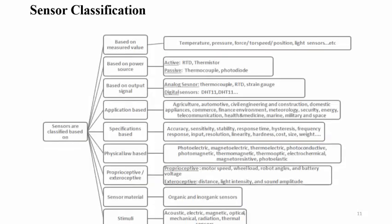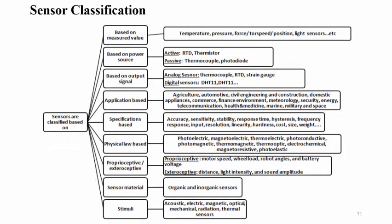So this is about the simplified block diagram of the data acquisition system. Now we are going to discuss the classification of the sensor. In this hierarchical diagram we can see the classification of sensors based on different scenarios or applications.